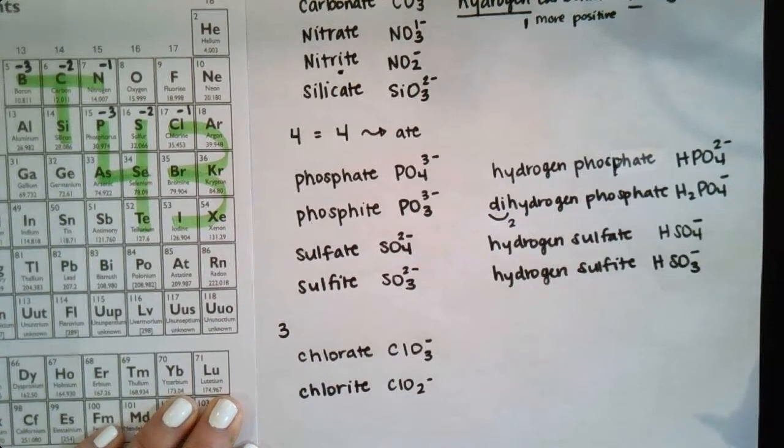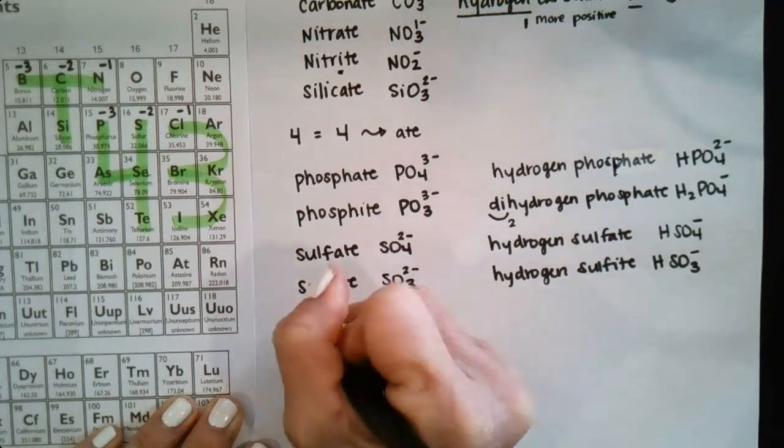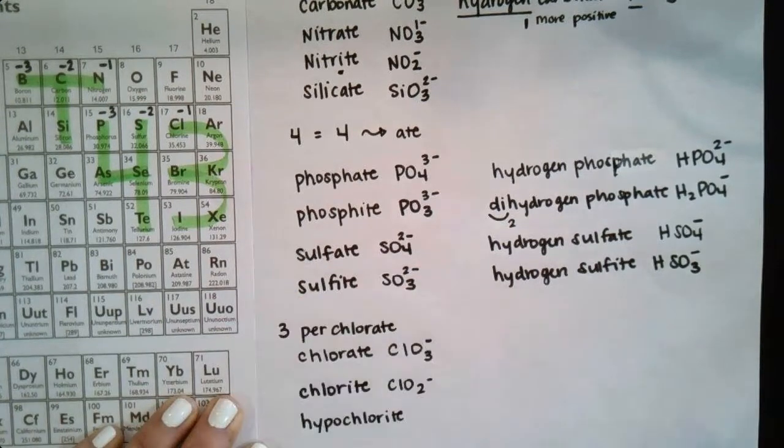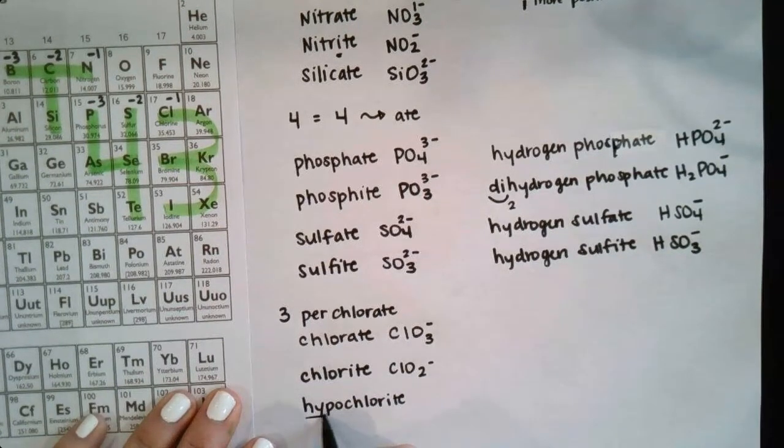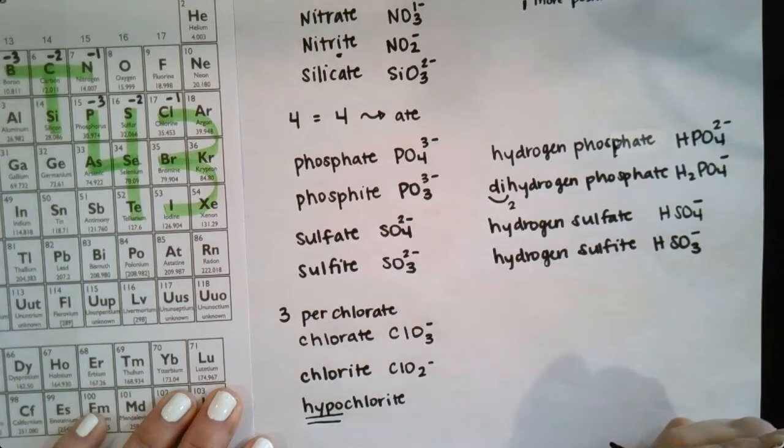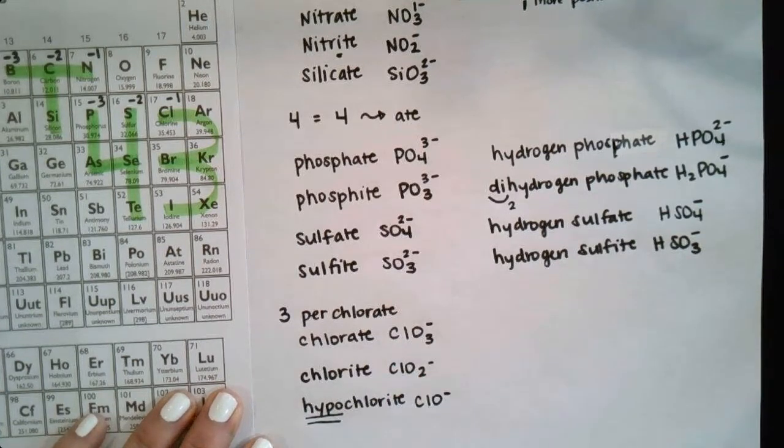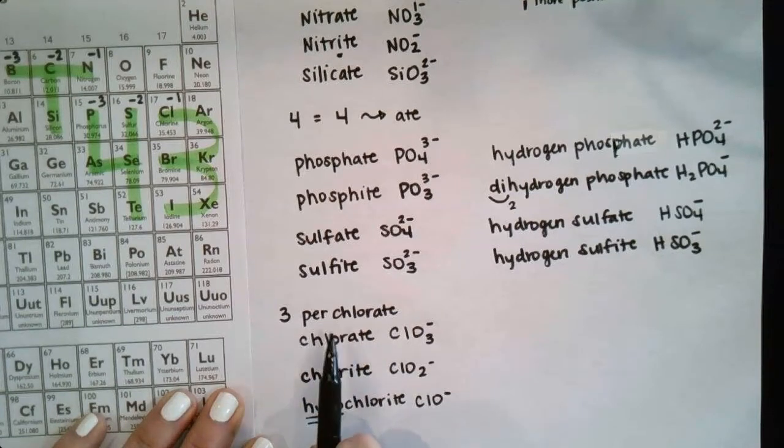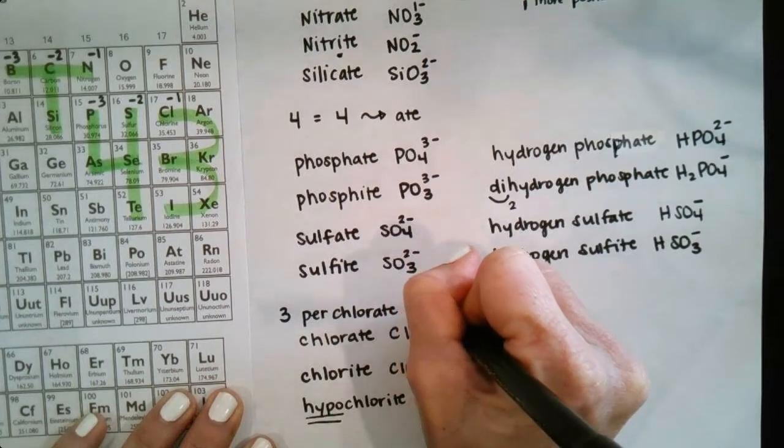And then we have two extras. We have hypochlorite, and we have perchlorate. So these are some extremes on chlorate. Hypochlorite is like, this is like extra, right? You're even extra chlorite. So we're going to take off even one more oxygen. So this is just going to be CLO minus. It's one, one oxygen. And perchlorate is like extra chlorate, so it's going to be even more oxygens, CLO4 minus.